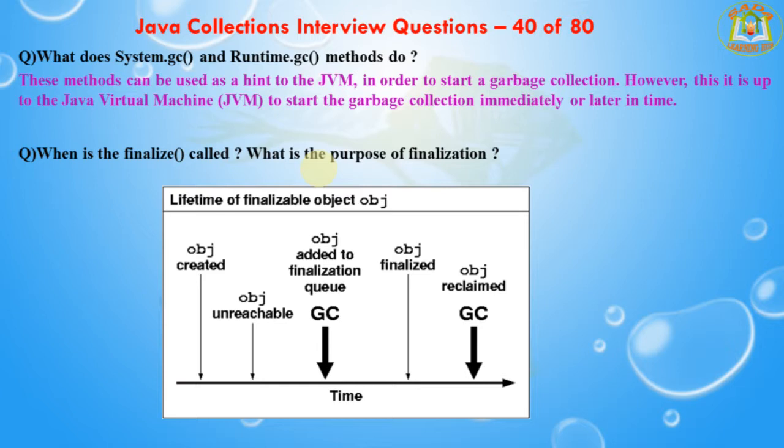The first question is: what does System.gc method and Runtime.gc method do? These methods can be used as a hint to the JVM in order to start a garbage collector. However, this is up to the Java Virtual Machine to start the garbage collection immediately or later in time.